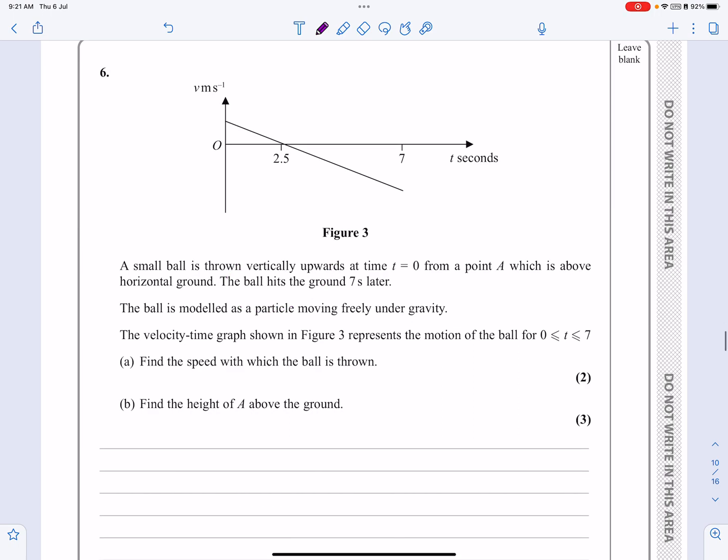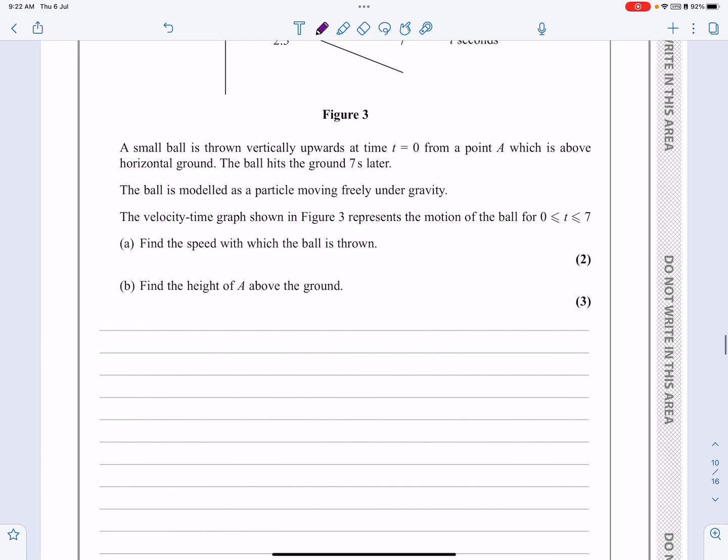Quite unusual that they give me a velocity-time graph at the start. The ball has been thrown upwards from T equals 0 from a point which is above horizontal ground, and then it hits the ground seven seconds later. Right, what I'm going to do is I always do a quick sketch of this just to help myself out when I'm doing it.